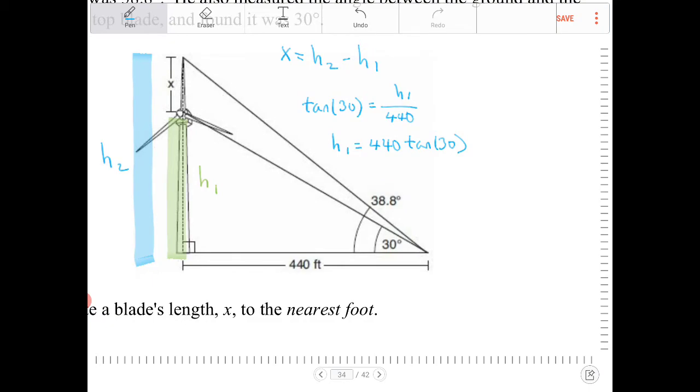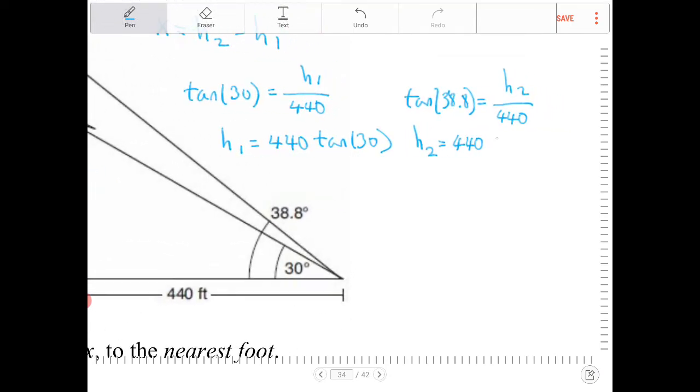h2 is opposite 38.8 degrees and 440 is adjacent to 38.8 degrees. Using the same trig ratio, tan 38.8 equals h2 over 440. Solving for h2 by multiplying both sides by 440, h2 equals 440 tan 38.8.